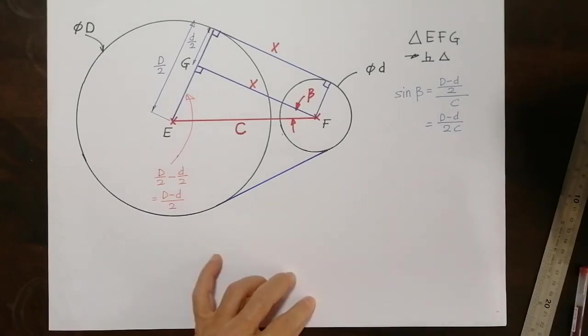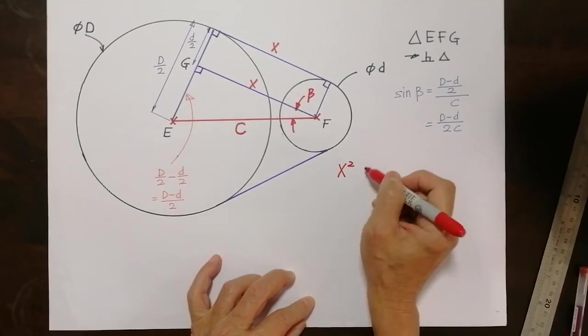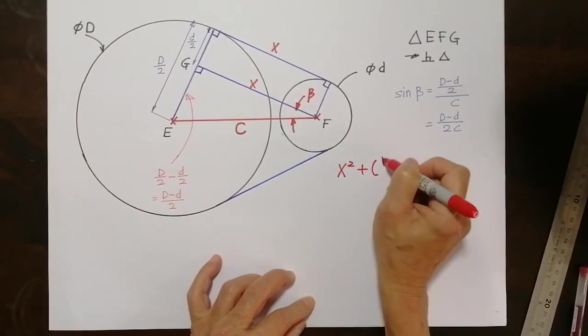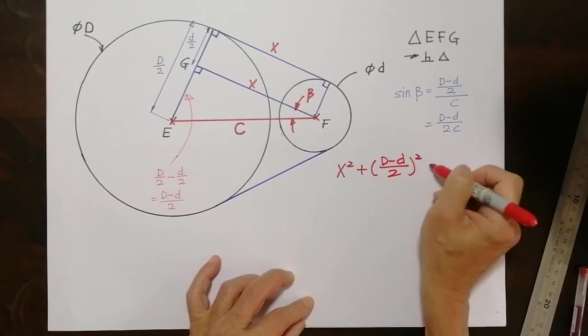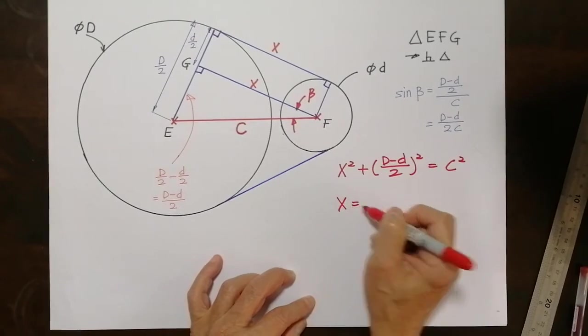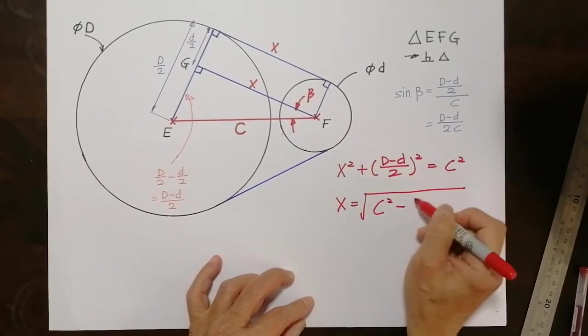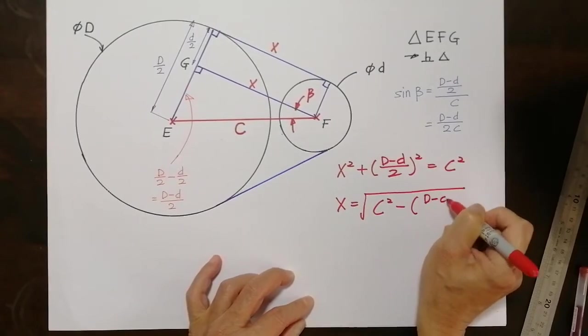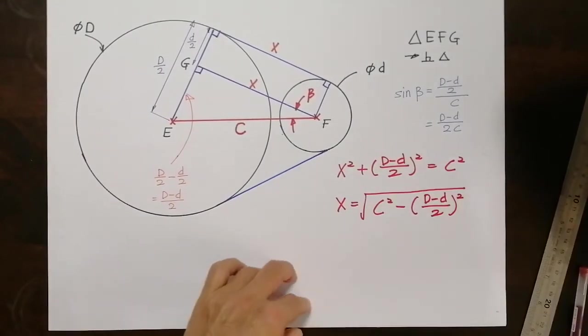And that allows us to say that X squared plus (D - d)/2 squared equals C squared. And that allows us to say that X actually is a square root of C squared subtract [(D - d)/2]². That's beautiful.